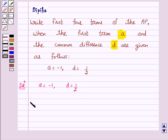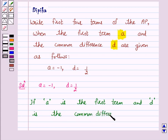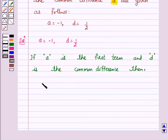Now we know that if a is the first term and d is the common difference, then a, a+d, a+2d, a+3d, and so on is an arithmetic progression.